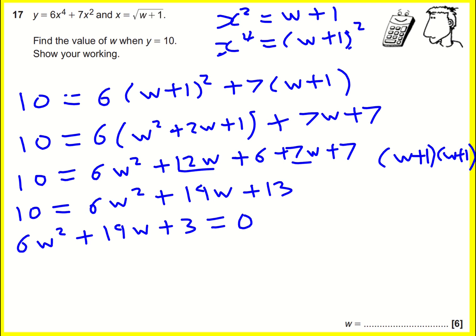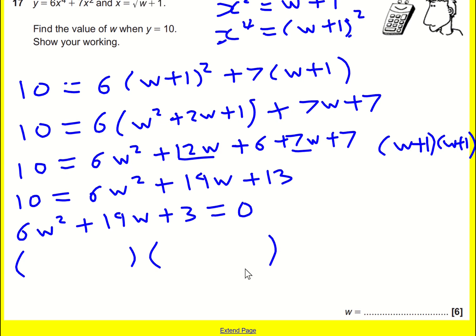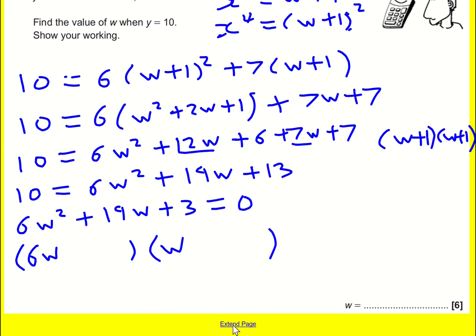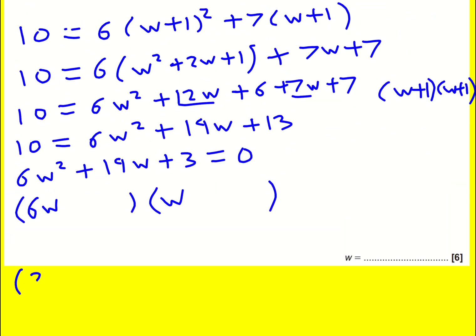All right, still not looking particularly easy because I've got this 6w squared there, there's no common factors, I can't cancel this down. One thing you could do is use the quadratic formula at this point if you wanted to. But I'm going to give it a go and just try and factorize it. Now factorizing this kind of expression is a bit tricky, because I don't know if this is a 6w and a w, or if it's a 3w and a 2w.